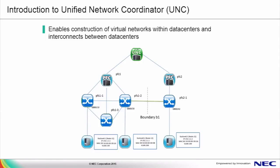Here is our first view into how UNC manages multiple data center networks. At the top of this diagram is the Unified Network Coordinator, which can run on any typical server. We have multiple programmable flow controllers and programmable flow switches at separate data center networks, which could be geographically dispersed. At the center of this diagram, we have a boundary labeled B1, which represents any data center interconnect provided by dark fiber or traditional network appliances. Although there's a single UNC icon, the UNC is not a single point of failure since it does not participate in the control plane. All control plane and OpenFlow functions stay on the programmable flow controllers. The UNC provides the central point to operate and deploy configuration to multiple devices throughout the network.